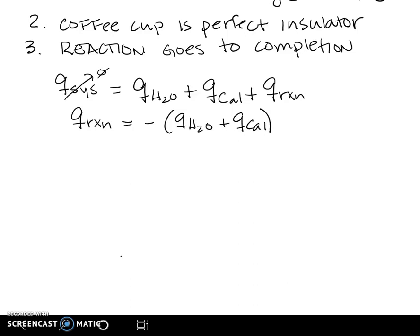Now, what we're also going to assume is that our Q of our calorimeter is going to be equal to zero. We're going to assume those two styrofoam cups don't absorb any heat. So that gets rid of that part, that variable. So now we could say our Q of our reaction is going to equal the minus of Q of our water.